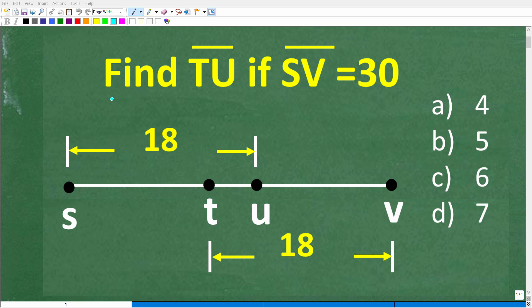So let me explain the problem. The problem says find TU if SV is equal to 30. So this little line above TU means find the distance from point T to point U. So this is what we're looking for. Here's point T and here is point U. We want to find the distance between T and U.